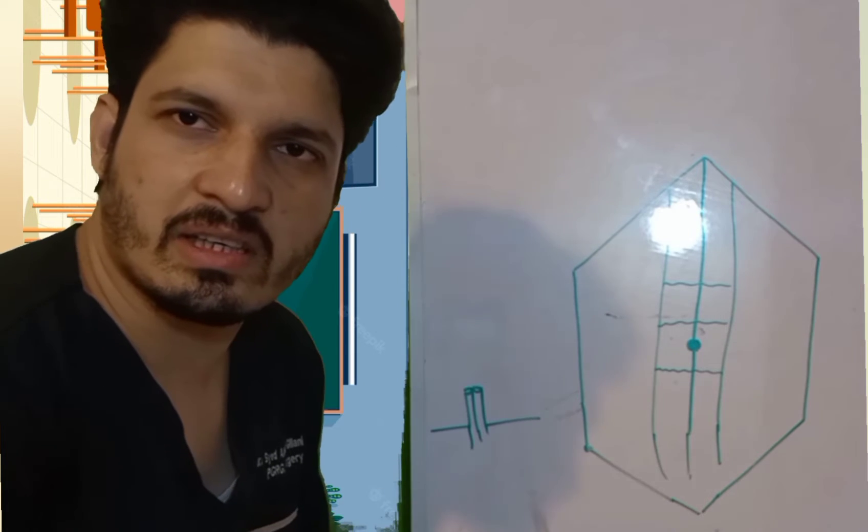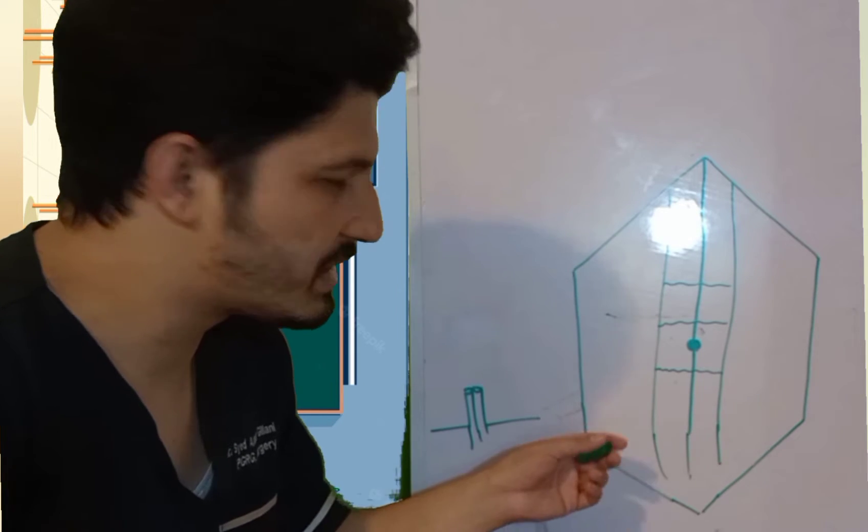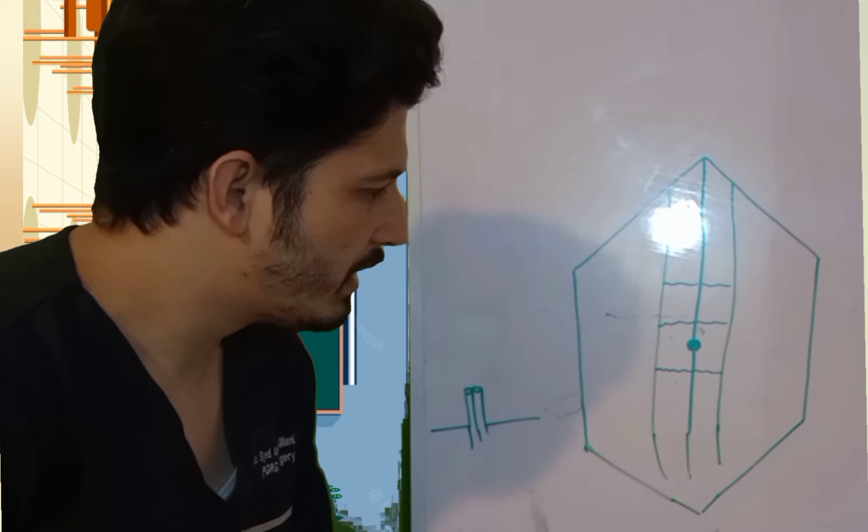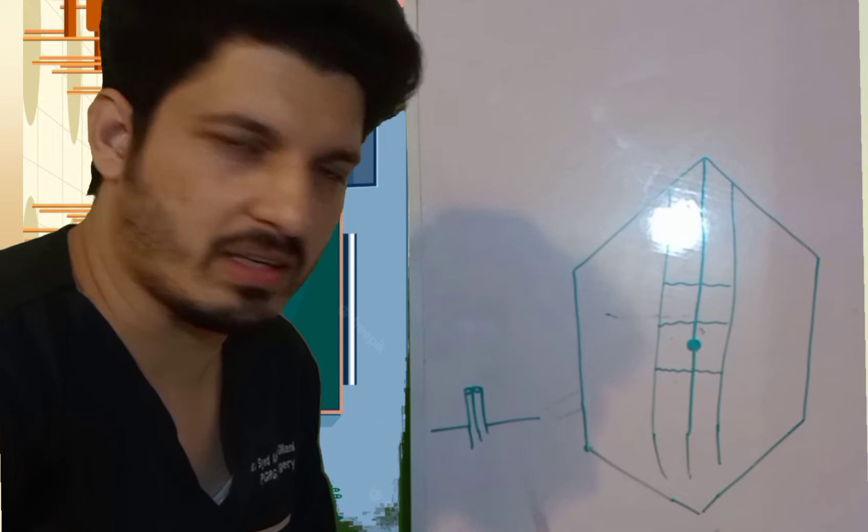Fourth thing, in case of ileostomy, you will make the ileostomy on the right side and you will make the colostomy on the left side.